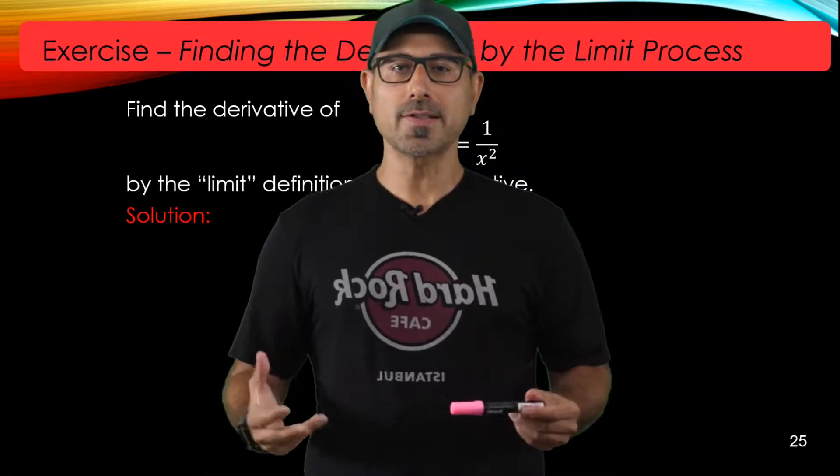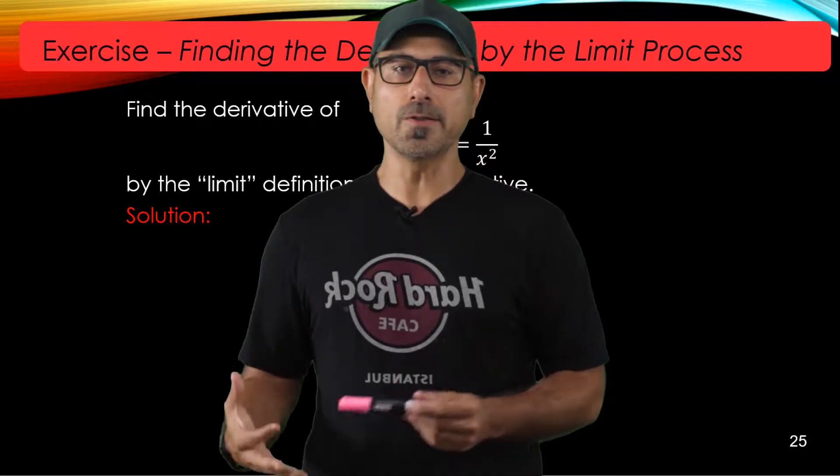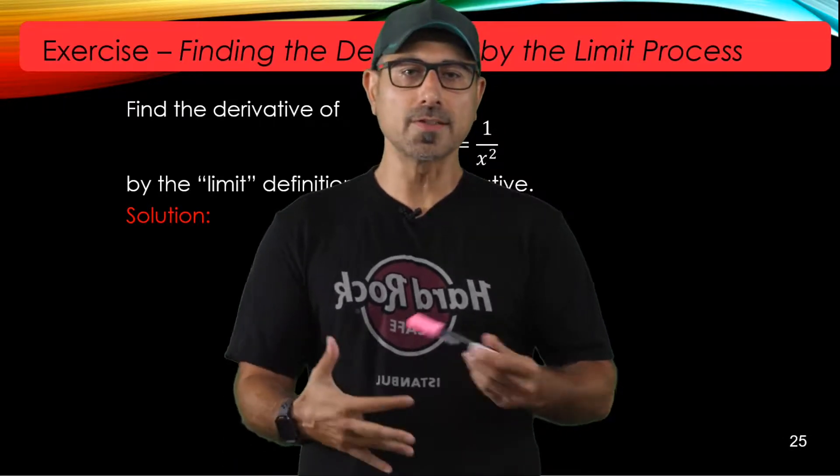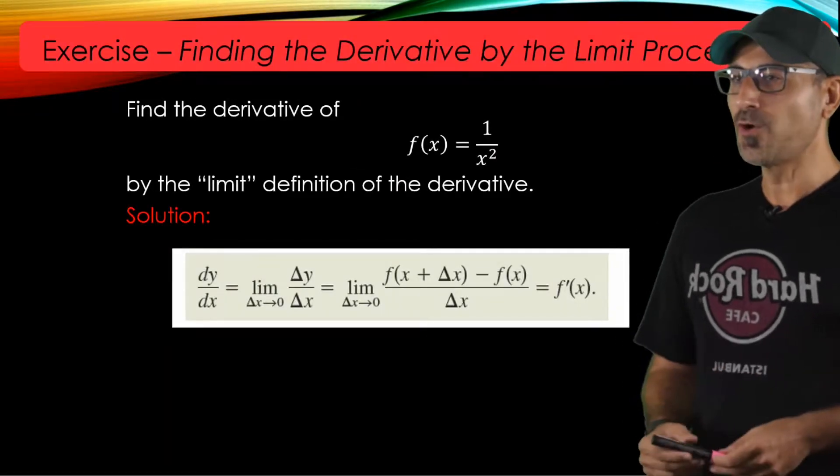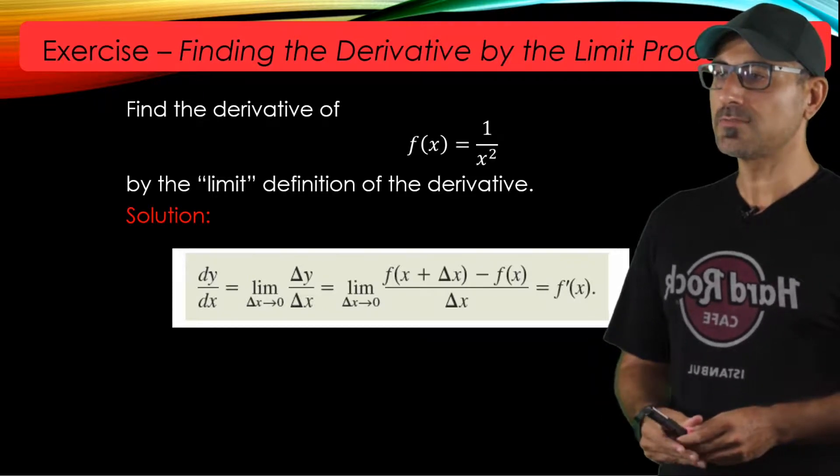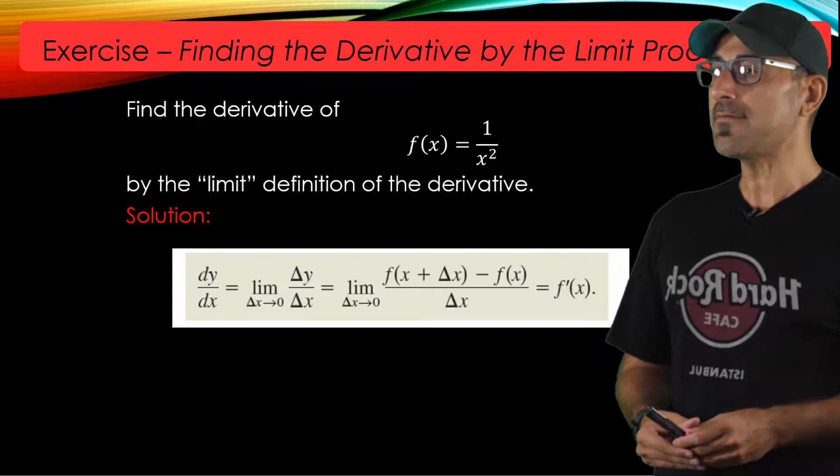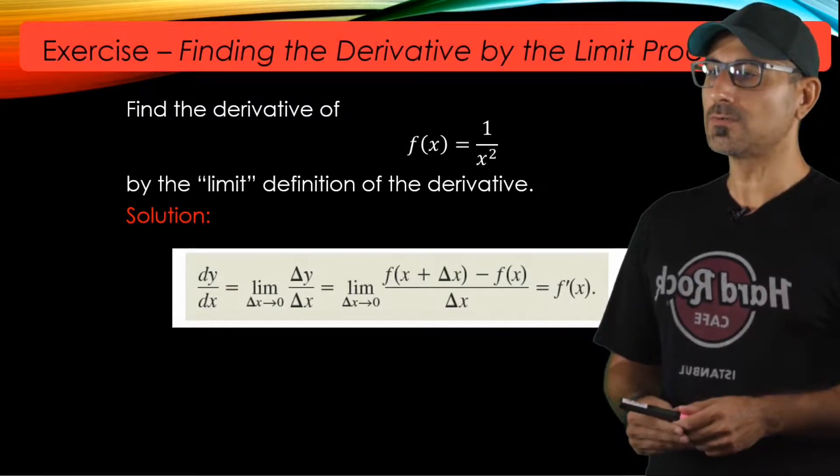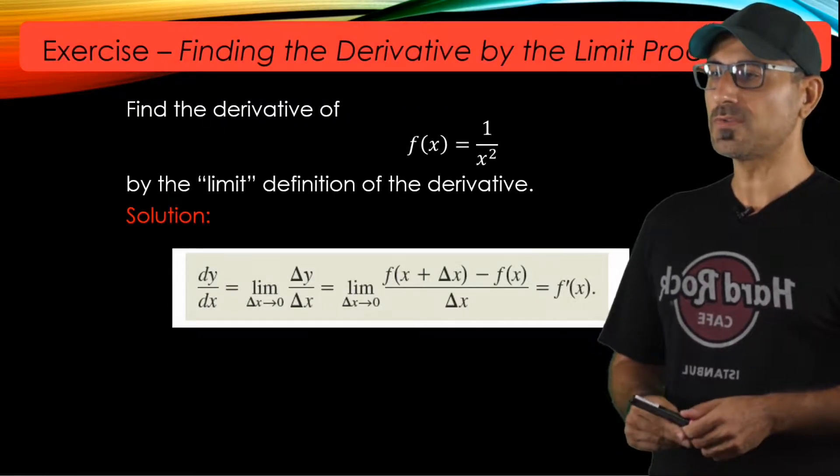So the limit process was this stuff that we learned in chapter 2, so we gained all the skill. And this formula is the definition of the derivative of a function f. There are alternate ways to represent the derivative of a function.